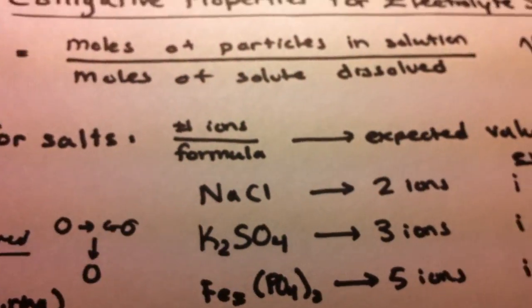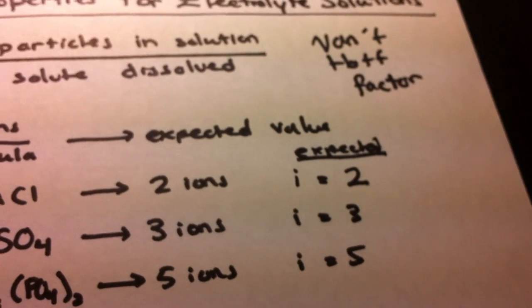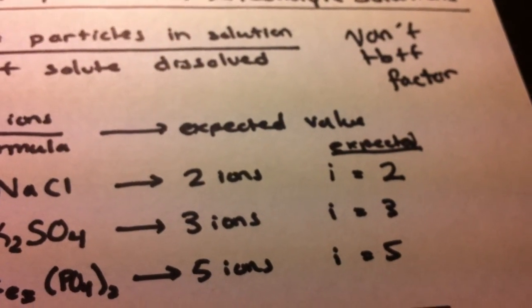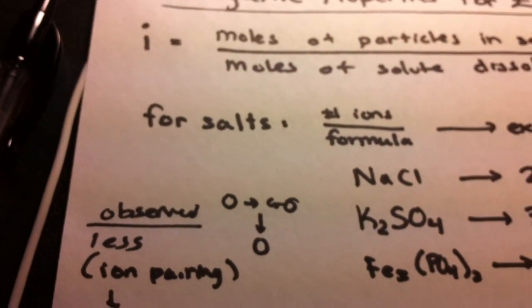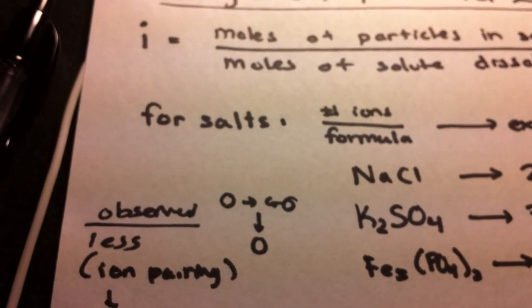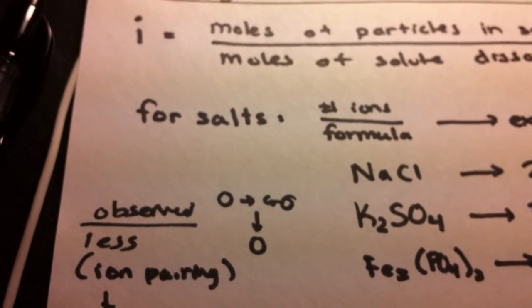It's important to note that these are the expected values and the actual observed values in experiments is actually a bit less because of what we have called ion pairing.